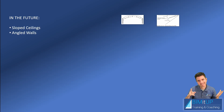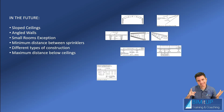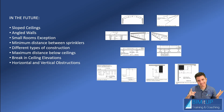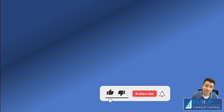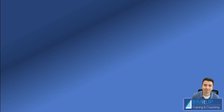This has been a brief introduction to sprinkler spacing — there are many other factors to consider: sloped ceilings, angled walls, small room exceptions, minimum distance between sprinklers, different types of construction, maximum distance below ceilings, changes in ceiling elevation, horizontal and vertical obstructions, concealed spaces, attic storage, and much more. Let me know in the comments which topic you're most interested in and I'll create that video. Thank you for watching — please like, subscribe, and hit the bell to get notified. See you in the next video.